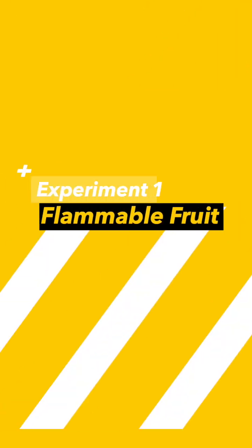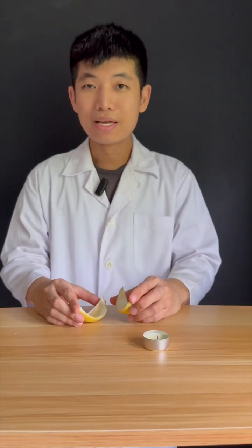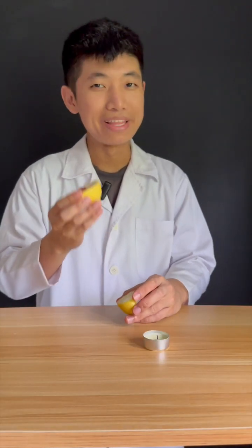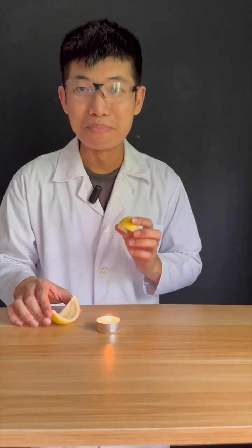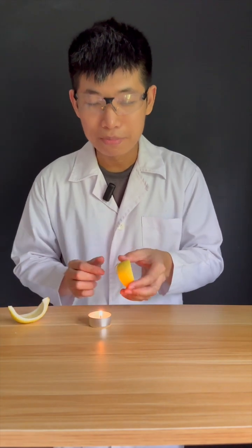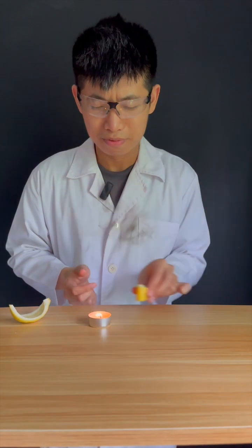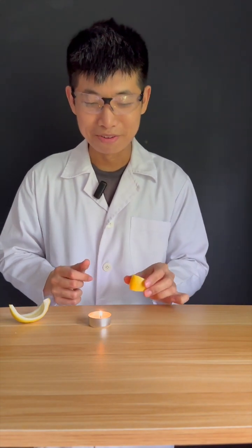How much chemistry can we do with just one lemon? We'll find out. Do you know that lemon peels contain a flammable substance? Safety goggles on. I'm going to light up my candle. Let me show you how you can make a mini fireball. You're going to aim your lemon peel at the candle and observe for a little fireball here.